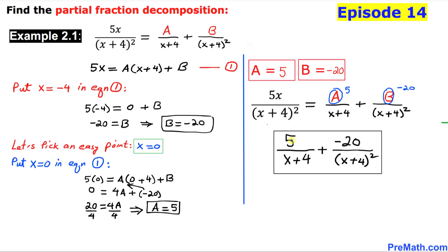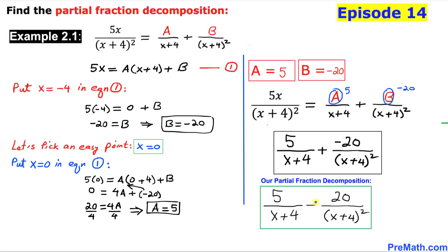With A replaced by 5 and B replaced by negative 20, and placing the negative sign in the middle, that is our final answer. Thanks for watching, and please don't forget to subscribe to my channel for more exciting videos. Bye!